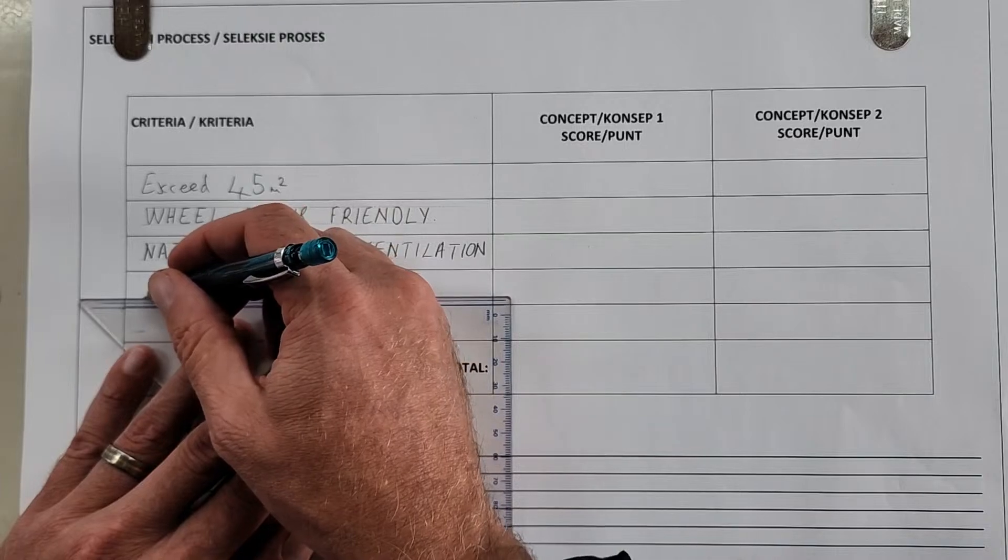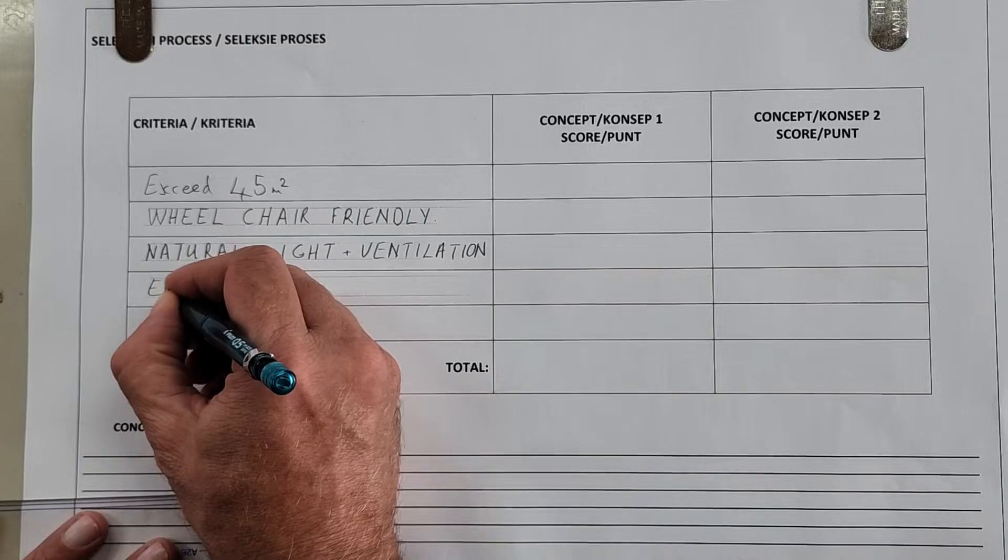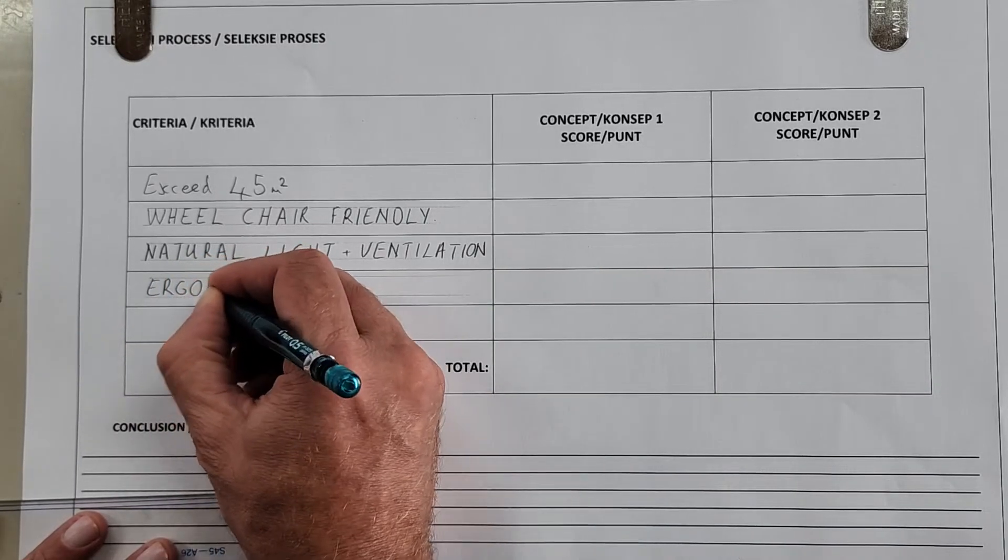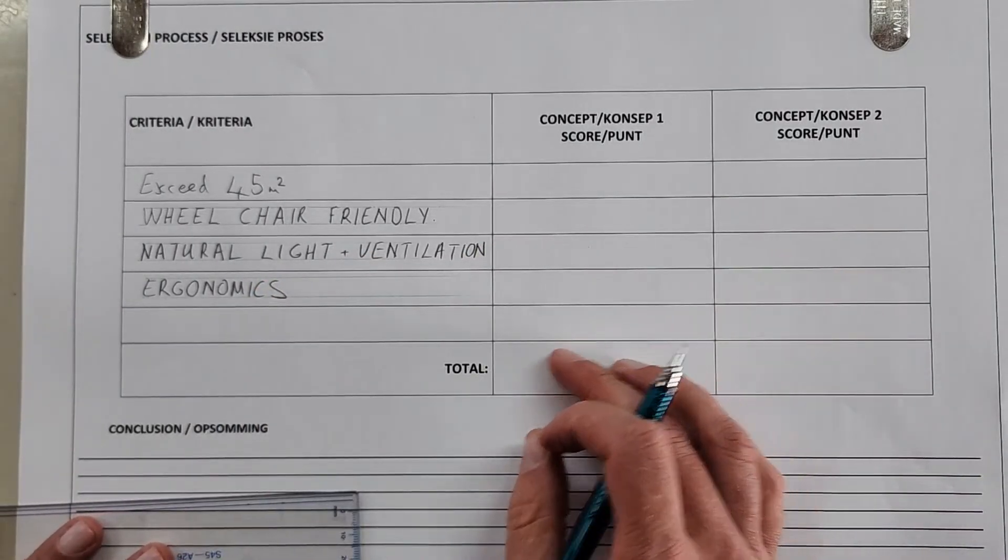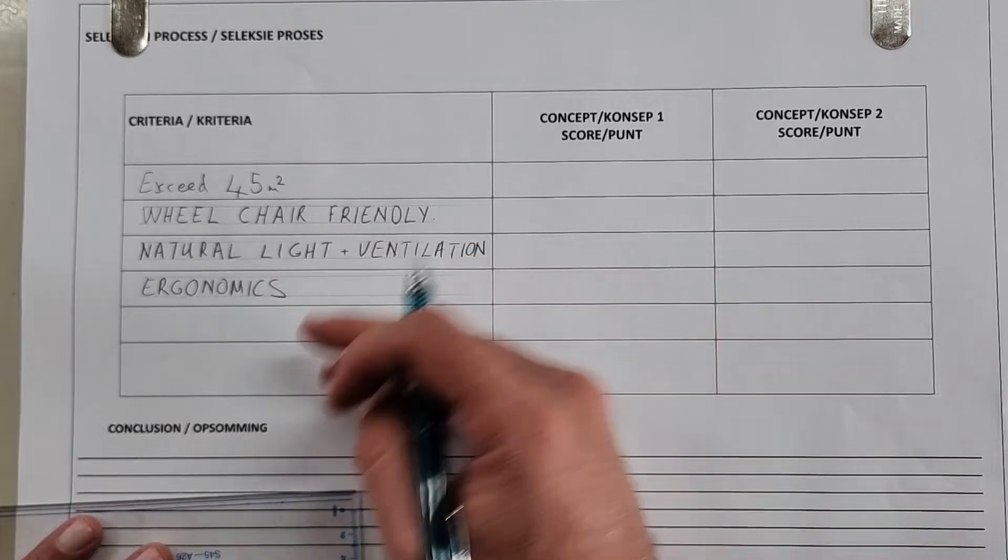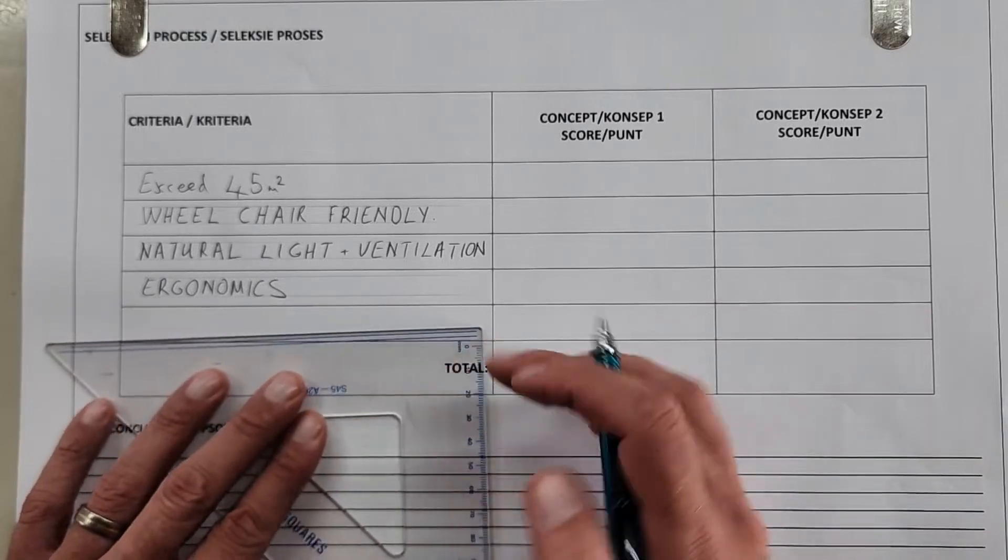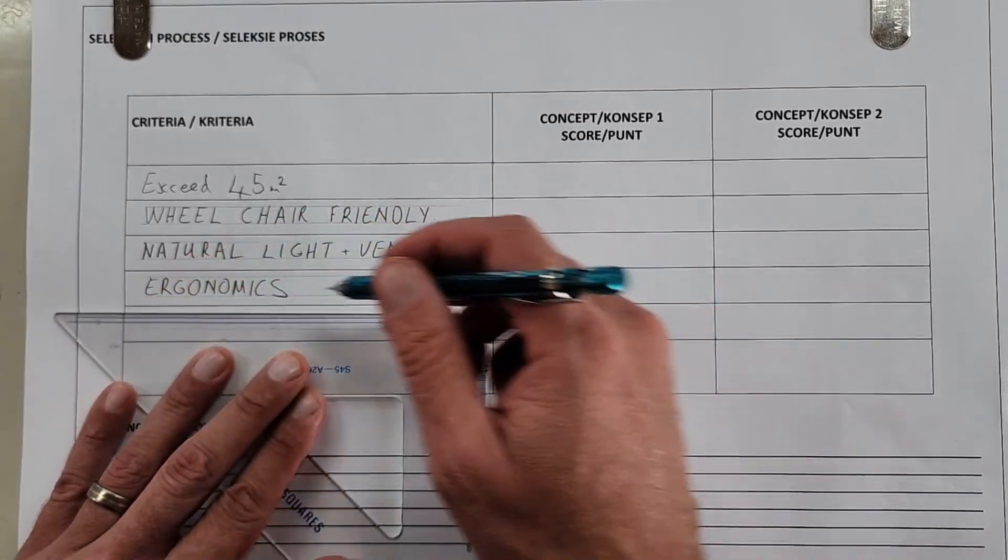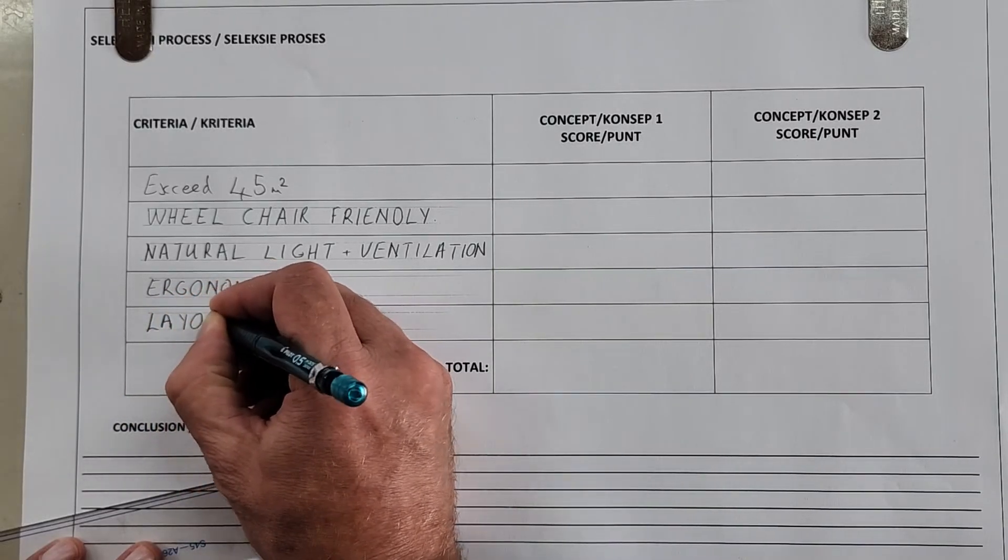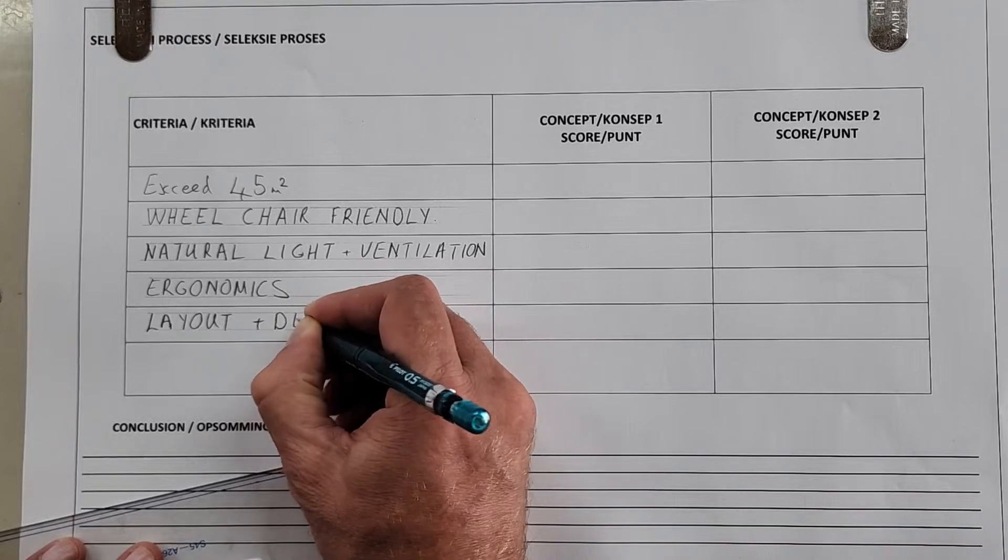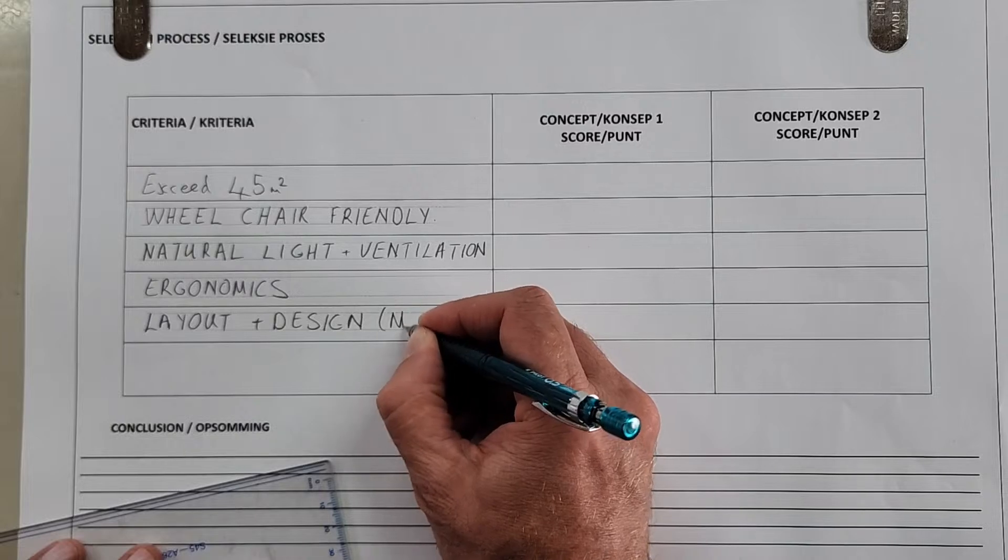Natural light and ventilation has to do with the windows. What would be a fourth one? What about the ergonomics, because that was part of your research. For those of you unsure what is ergonomics, that is how the human living in that house will relate to the layout of that house.